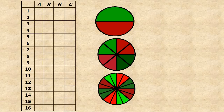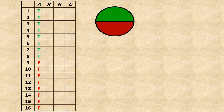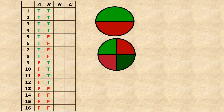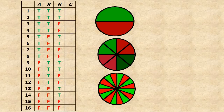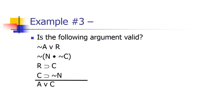For the A column, half-on half-off means eight true, eight false. Since we went by eight, we go by fours in column R — four on, four off, four on, four off. After that, divide down to two-on, two-off for C. Finally, you always end on your last propositional variable with one-on, one-off, all the way down for N.